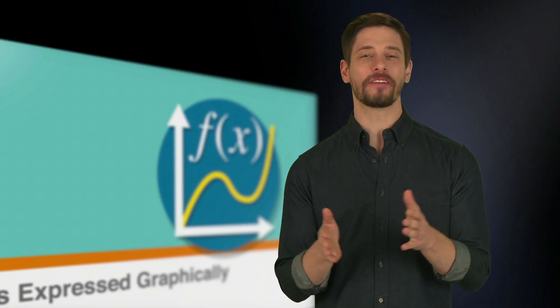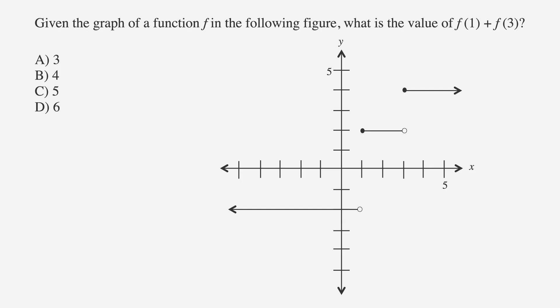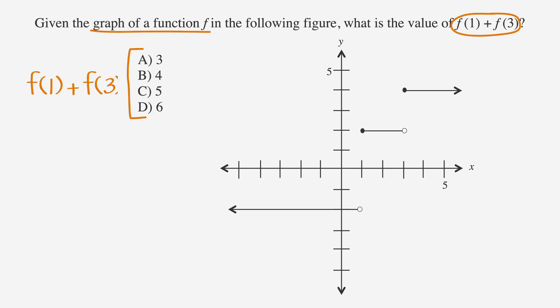With that in mind, let's solve an SAT problem that asks about functions in graphic form. Given the graph of a function f in the following figure, what is the value of f(1) + f(3)? First, let's underline the facts, circle the key words, and label the answer choices. We need to find the value of y when x is 1, and the value of y when x is 3, then add them together.